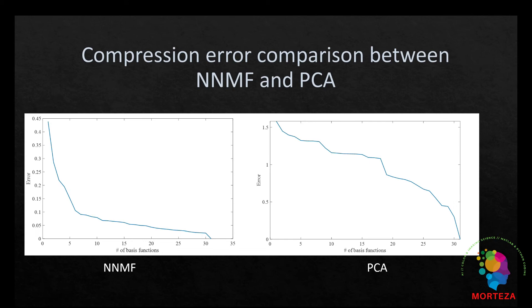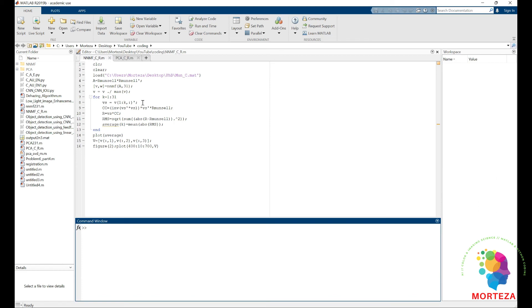Let's also have a quick look at the coding part of this video. As you can see, this is how we did NNMF, non-negative matrix factorization. This is our data set. This is where it is located. And first, the covariance matrix is formed and then the non-negative matrix factorization of the covariance matrix is extracted.